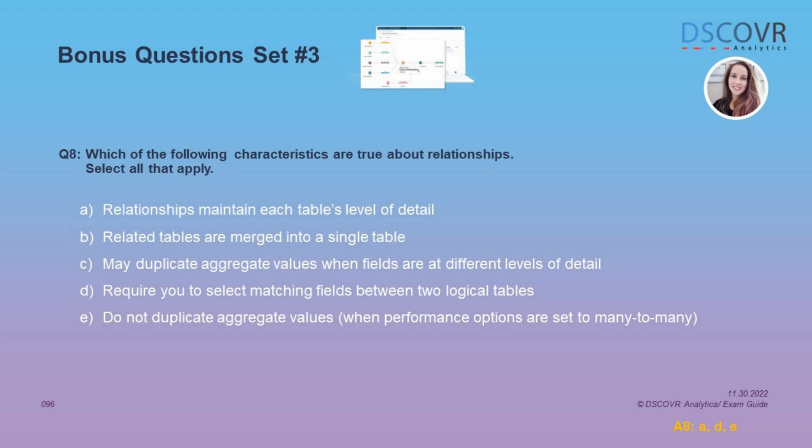Let's take a look at question number eight: which of the following characteristics are true about relationships? Select all that apply — and we have three correct answers here. Relationships maintain each table's level of detail. They also require you to select matching fields between two logical tables. And they do not duplicate aggregate values when your performance options are set to many-to-many.